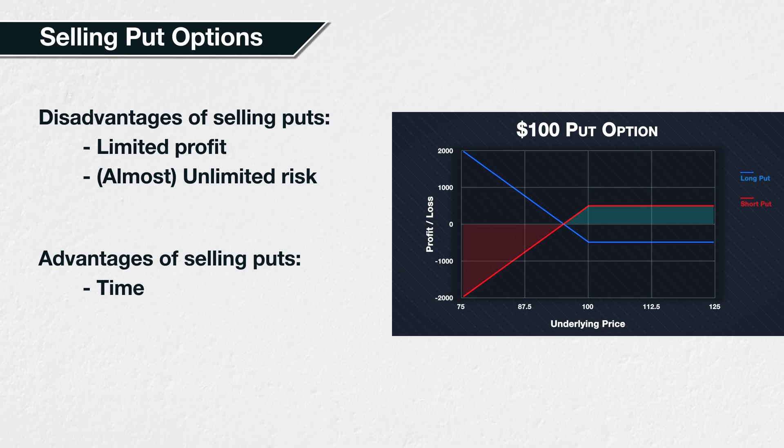Put another way, if the price moves down, this is bad for the put option seller. However, if the price moves up, or if the price does not move at all, then this is good for the put option seller. So if nothing happens, the seller is benefiting.